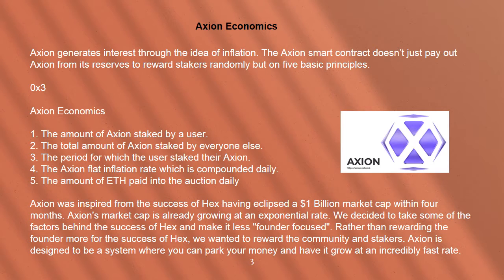The 5 principles are: 1. The amount of Axion staked by a user. 2. The total amount of Axion staked by everyone else. 3. The period for which the user staked their Axion. 4. The Axion flat inflation rate, which is compounded daily. 5. The amount of ETH paid into the auction daily.